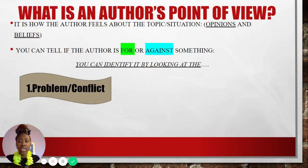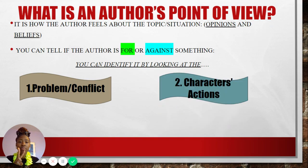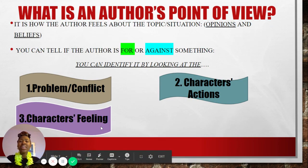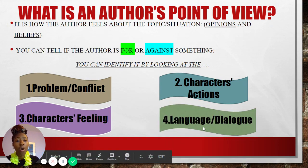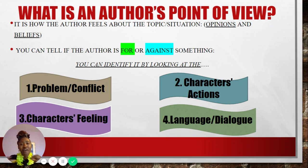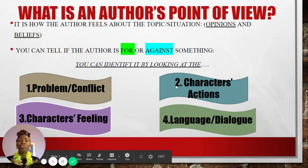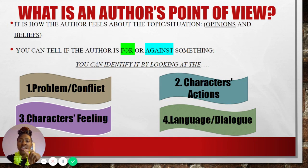There are four components that make up our diagram to help us understand the author's point of view — whether they are for it or against it. The first component is your problem slash conflict: simply the challenge present within the text. The second is your character's actions: what is the character doing or experiencing in the text? Third is your character's feelings: what emotions are the character or characters feeling in the text? And lastly, the fourth component is your language slash dialogue — this is where we search for signal words or clues that give us hints about the other components.